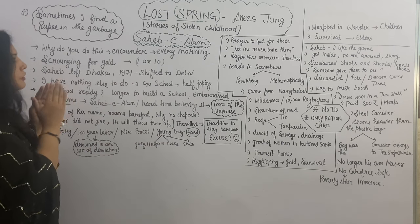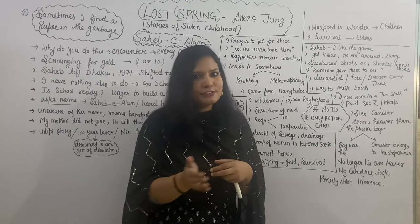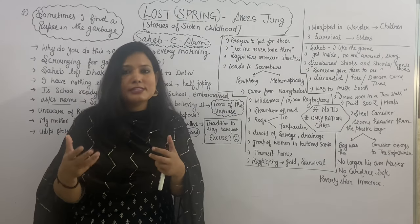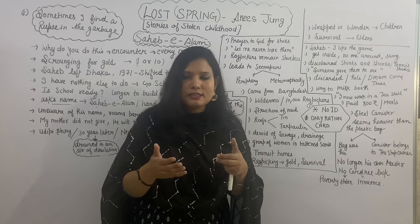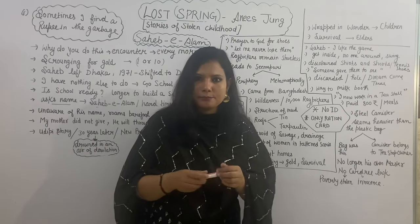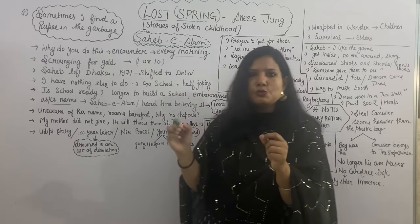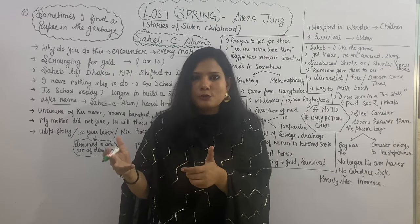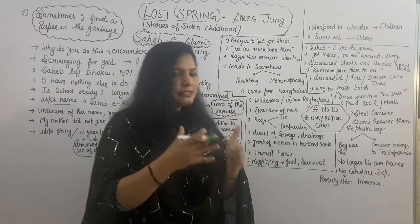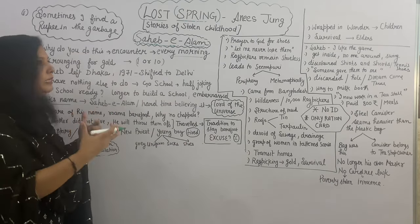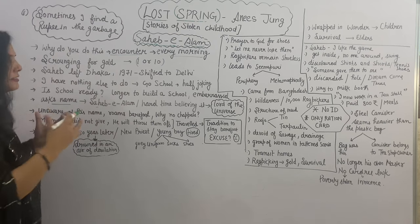Saheb-e-Alam was a rag picker. Always early in the morning he comes out, shuffles the garbage, and puts the valuable stuff into his rag or plastic bag. He goes to a garbage dump that is nearby the author's house, in her neighborhood. Since she used to encounter him on a daily basis, Anees Jung asked him why he does this. He replied that he has nothing to do, so that's why. Anees Jung then asked him whether he goes to school. He replied that there is no school in his area — if somebody builds one, definitely he would go.